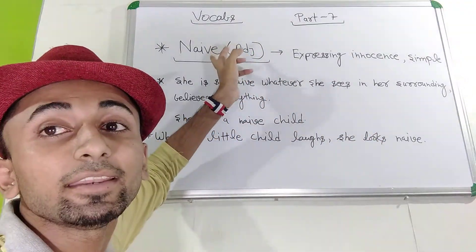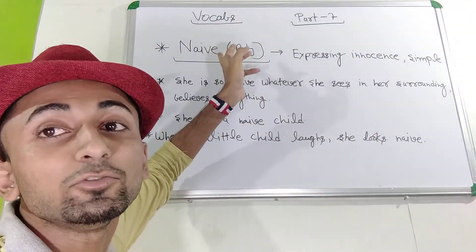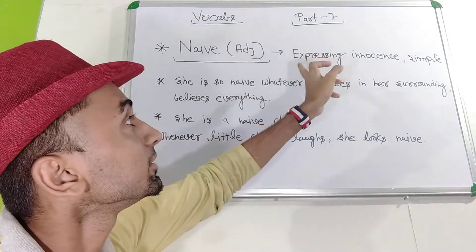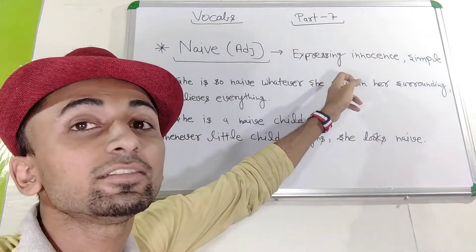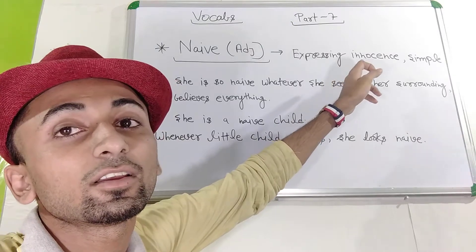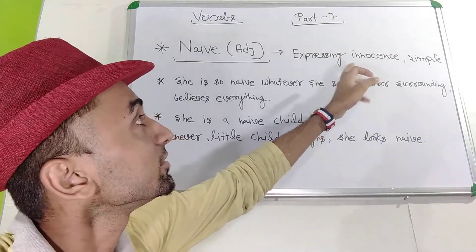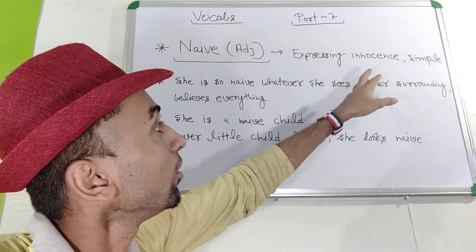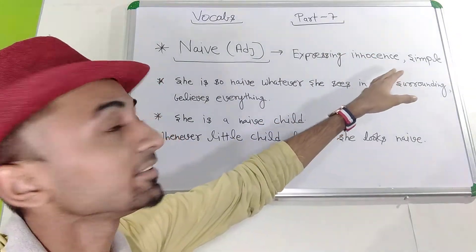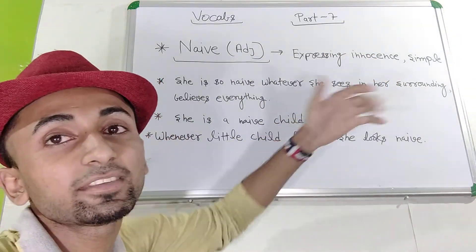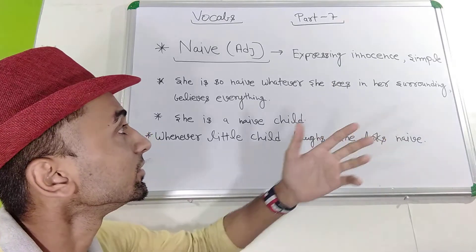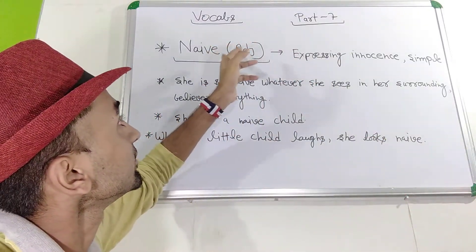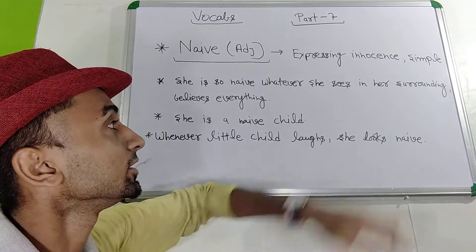The meaning of the word 'naive' — N-A-I-V-E — is expressing innocence. Expressing innocence means one who is innocent. It also refers to a simple person. That is the meaning of naive.